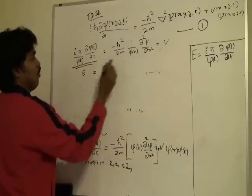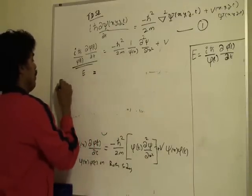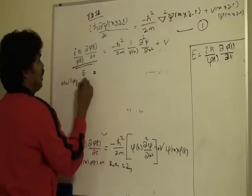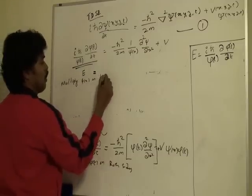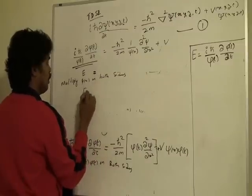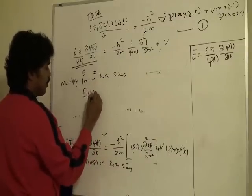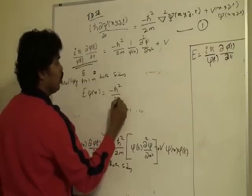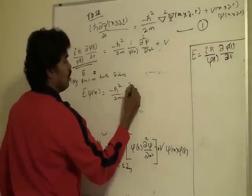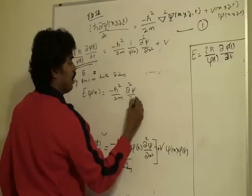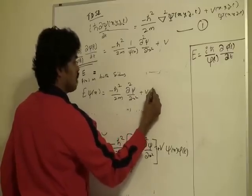Then what we can do is multiply by ψ of x on both sides. Then this becomes E ψ of x is equal to -ℏ²/2m ∂²ψ/∂x² plus V ψ of x.